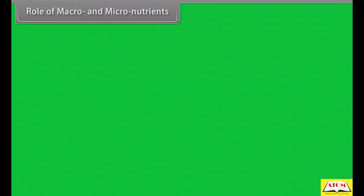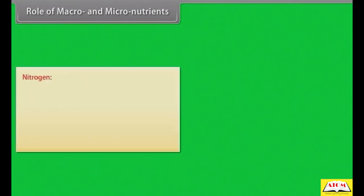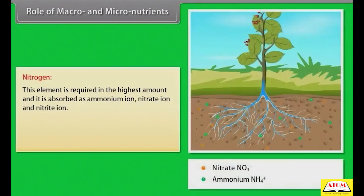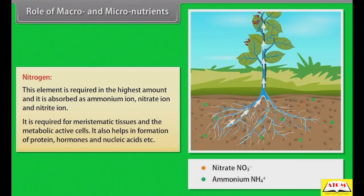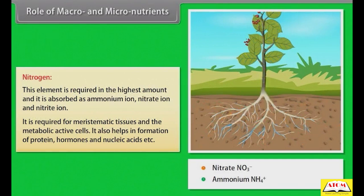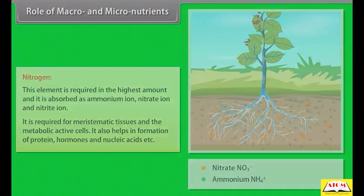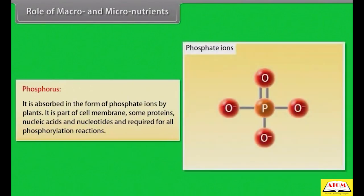Role of macro and micronutrients. Nitrogen: this element is required in the highest amount and it is absorbed as ammonium ions, nitrate ions and nitrite ions. It is required for meristematic tissues and metabolically active cells. It also helps in formation of proteins, hormones and nucleic acids. Phosphorus: it is absorbed in the form of phosphate ions by plants. It is part of cell membrane, some proteins, nucleic acids and nucleotides, and required for all phosphorylation reactions.